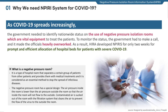We often use the term negative pressure rooms. A negative pressure room is a type of hospital room specially designed to separate a certain group of patients from other patients to hospitalize and provide medical treatments. Basically, the air pressure inside the room is lower than the air pressure outside, so that air inside the room will not flow to the outside, although non-contaminated filtered air will flow in. Contaminated air is sucked out of the room with a filtration system that cleans the air to prevent the flow of the virus to the outside.